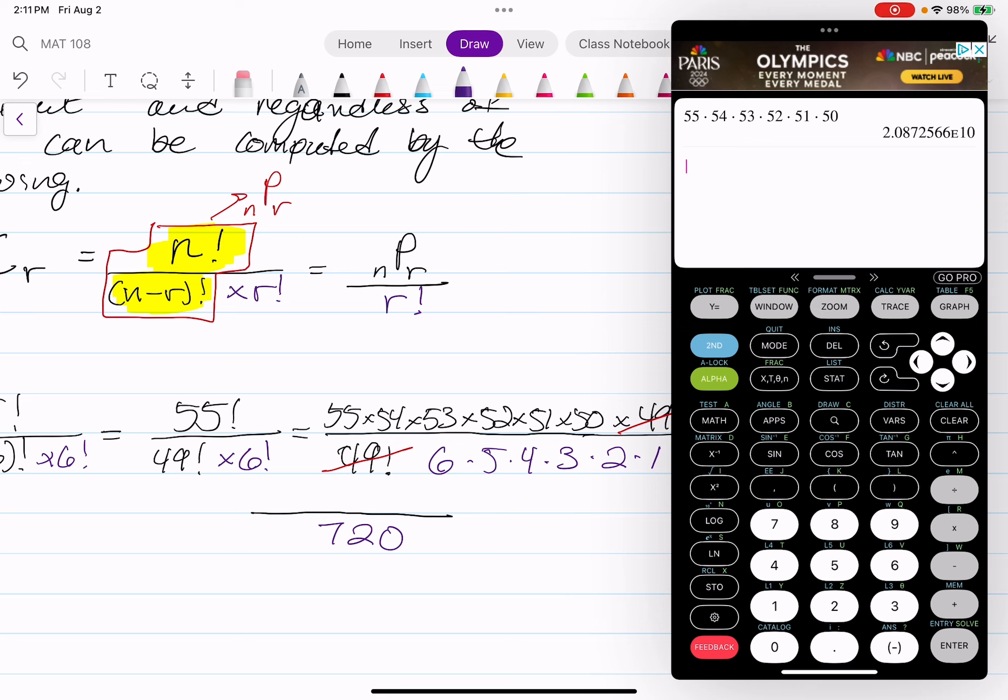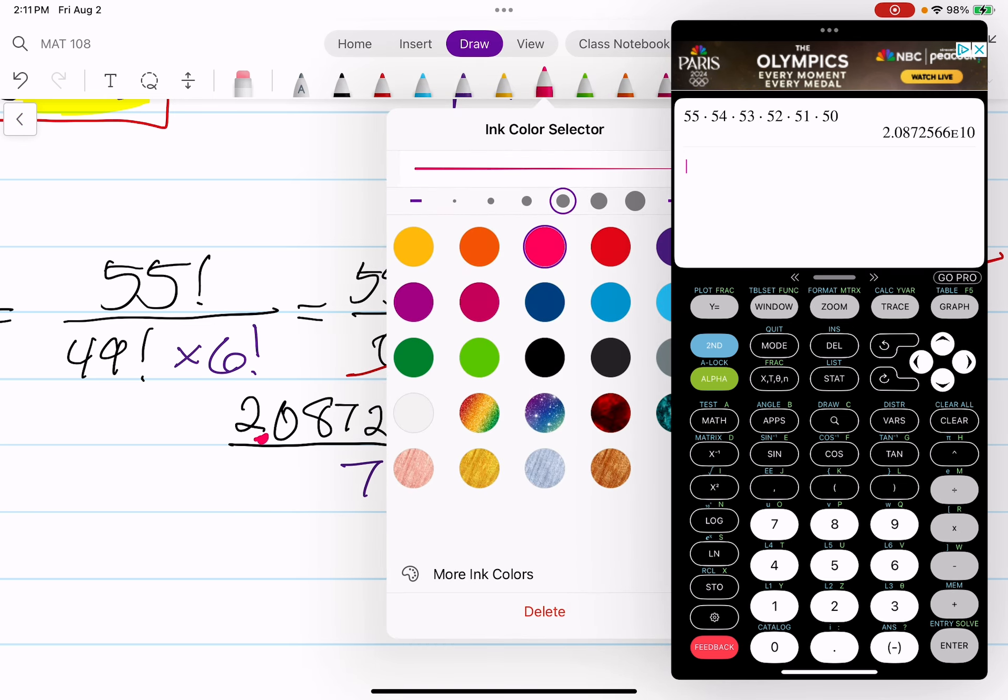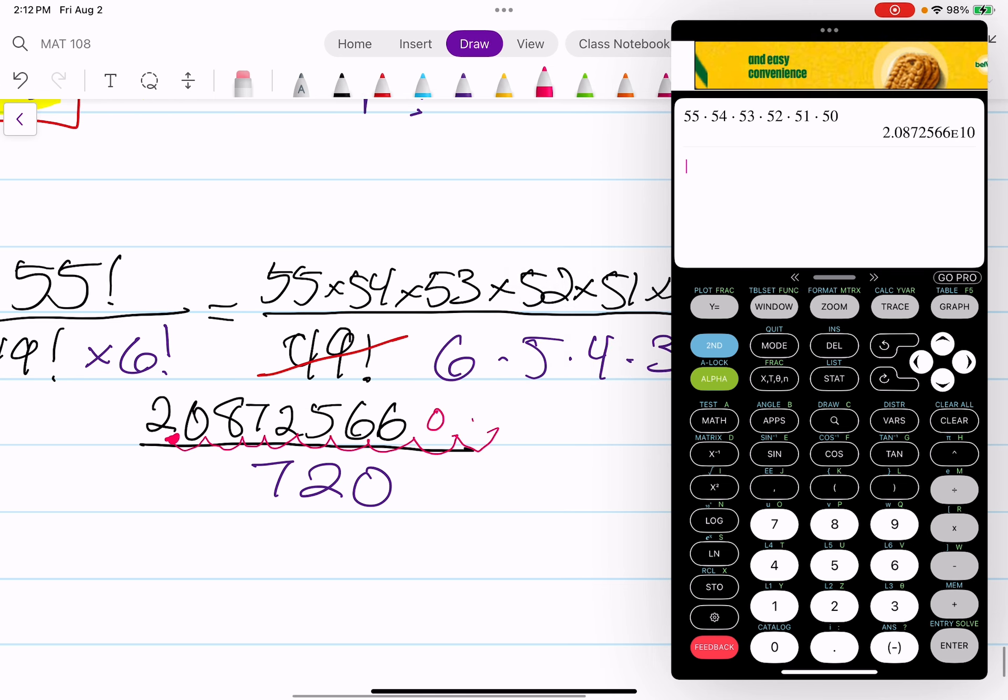So basically that e to the 10 means to move the decimal 10 places over to the right. So I'm going to start writing it down, so that's 20872566 and then put my decimal here in a different color because it's e to the 10, move the decimal over 10 units to the right. 1, 2, 3, 4, 5, 6, 7, 8, put another 0 there, 9, put another 0 here, 10, put another 0 there. That is my number. Let me make sure I wrote it down correctly. 2.08725661234567891. Awesome.